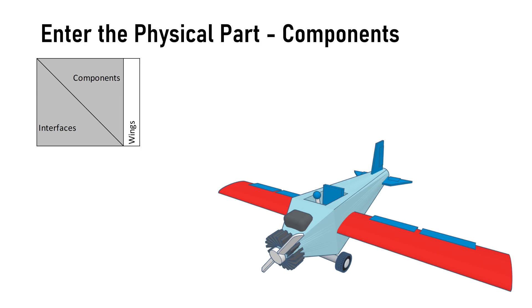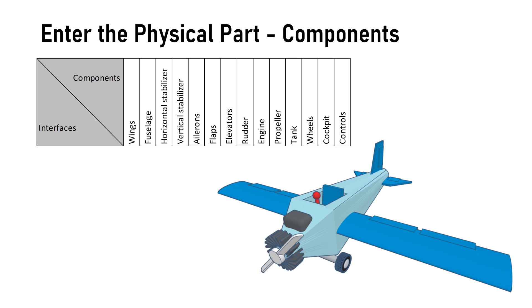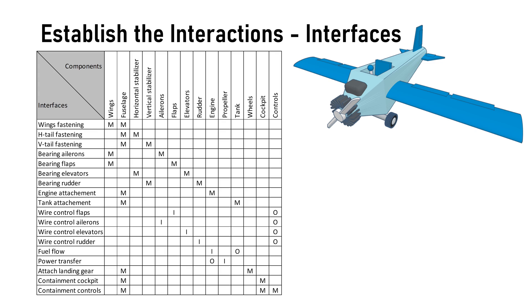As next, we enter the known parts of our simple airplane: the wings, the fuselage, the horizontal and the vertical stabilizer, the ailerons, the flaps, the elevators, the rudder, the engine, the propeller, the fuel tank, the landing gears, the cockpit, and the controls. Then we establish the interactions between the components. And we have high level view of the physical system called airplane.